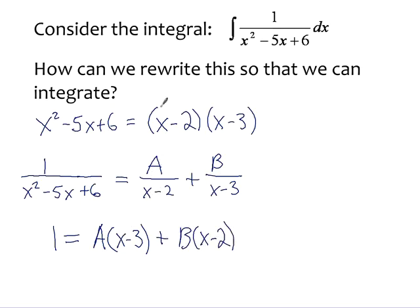I just multiplied both sides by this expression on both sides. Now we can solve this — we've basically got a system embedded inside this expression. We've got Ax plus Bx, and there are no x's on the left side, so Ax plus Bx equals 0x, which means A plus B equals 0. Simultaneously, we have negative 3A plus negative 2B must equal 1. So even though this looks like one equation, there are actually two equations embedded: one for the x term and one for the constant term. We can figure out A and B using that system.